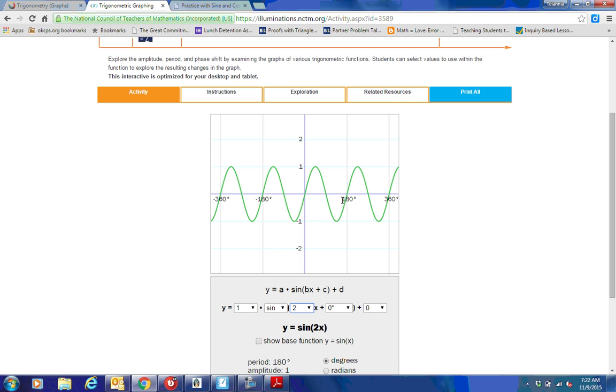Remember the formula was 2π divided by B, so if I divide 2π by 2 I just get π which is the same as 180. You can think of it as 360 divided by 2, which is 180.